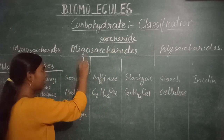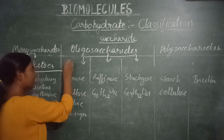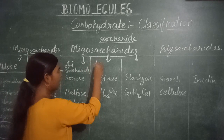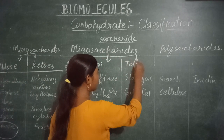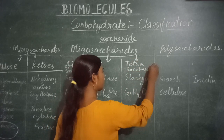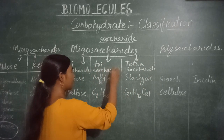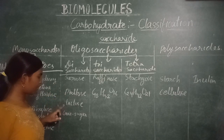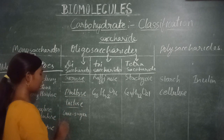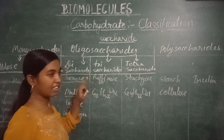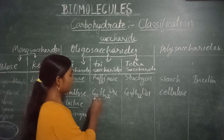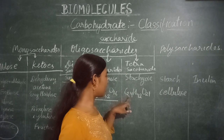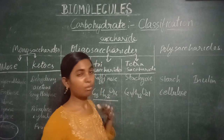Oligosaccharides are divided into three parts: disaccharide, trisaccharide, and tetrasaccharide. Examples of disaccharides are sucrose, maltose, lactose, and cane sugar — all of these we have to study in detail. The example of a trisaccharide is raffinose, with the formula C₁₈H₃₂O₁₆. The example of a tetrasaccharide is stachyose, with the formula C₂₄H₄₂O₂₁. These formulas are sometimes also asked in exams.